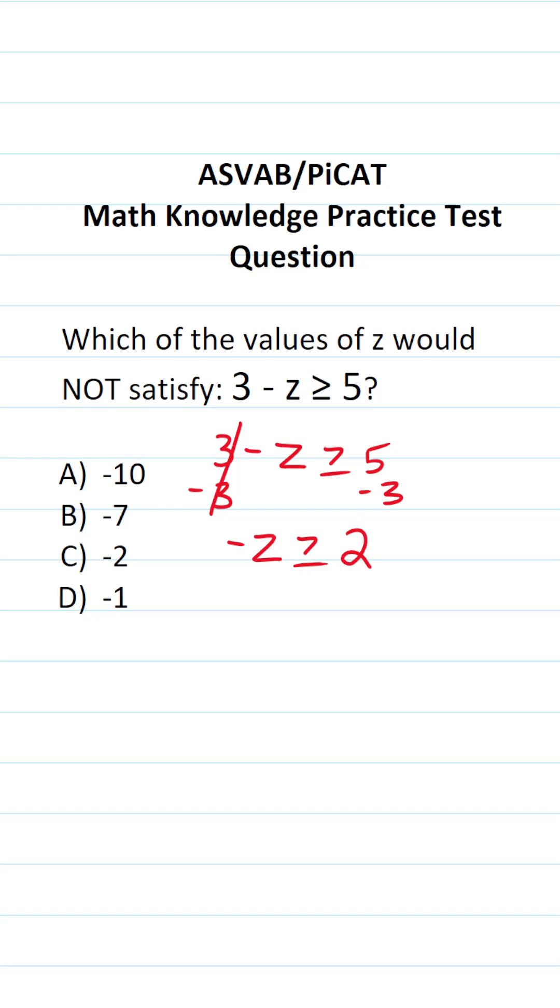So we're solving this inequality for z, not negative z. We've got to clear that negative. In order to clear that negative, we're going to divide both sides of this inequality by negative 1.